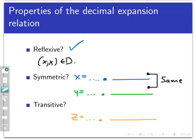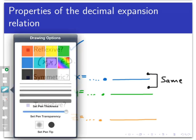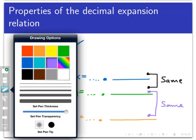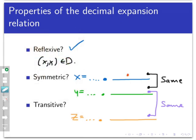Finally, let's check transitivity. Suppose x, y and y, z are in d. That means x and y have the same decimal expansion, and so do y and z. Therefore, if we wrote x, y, and z out as decimals, the string of digits to the right of the decimal point — even if infinite and non-repeating — will be the same for x as for y, and the same for y as for z. Therefore, the decimal expansions for x and z are the same, so x, z belongs to d. This relation is reflexive, symmetric, and transitive.